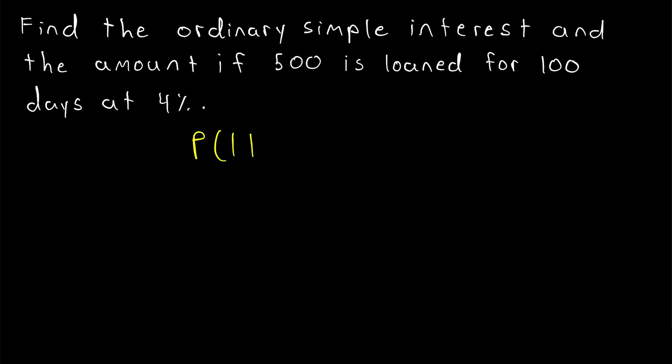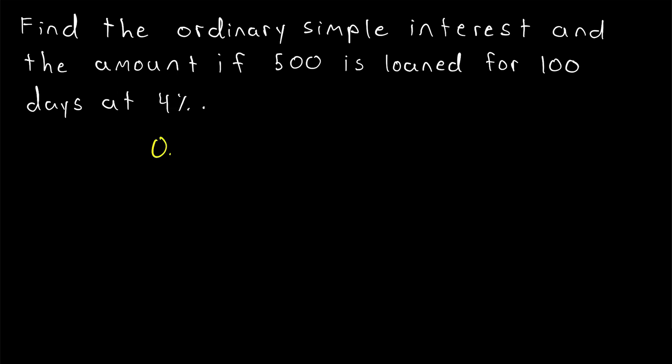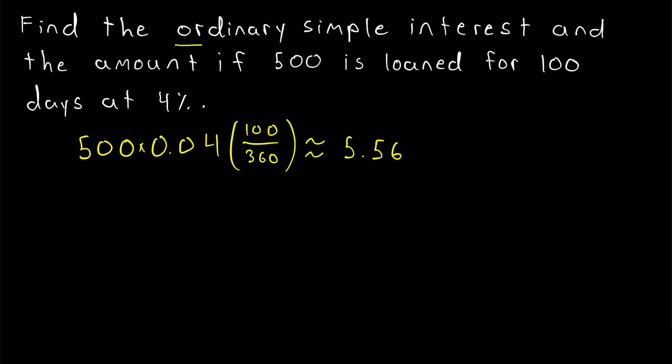Remember, in our simple interest formula, P times 1 plus RT, P times 1 is the principal, P times RT is the interest earned. So let's quickly calculate the interest. The interest rate is 4%, or 0.04. The amount of time that is passed measured in years using ordinary simple interest is 100, the number of days, divided by 360. And then this interest is being calculated on a principal loan of 500. This amount of interest is about 5.56.